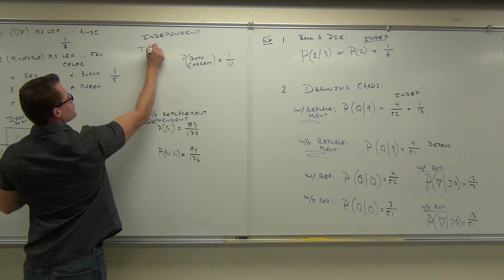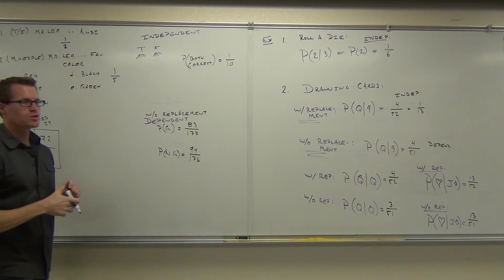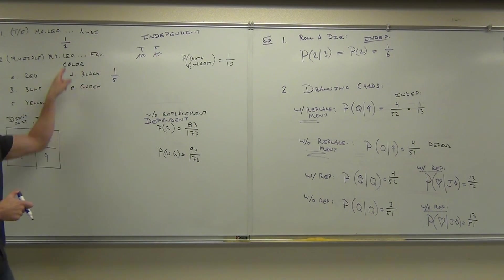When I drew that diagram, I drew true, false, and I had one, two, three, four, five options. One, two, three, four, five options. So for every choice I had here, I had this many choices.